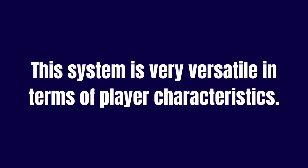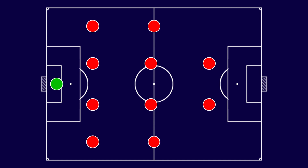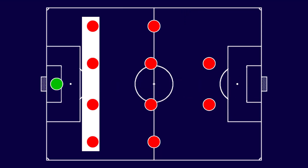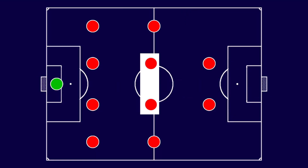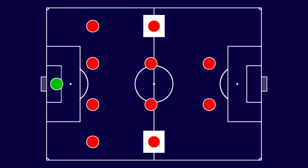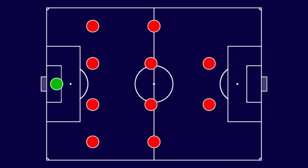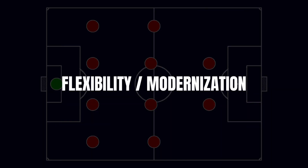This system is very versatile in terms of player characteristics. The classic flat 4-4-2, closely associated with English football, was based on physical and direct play. It had a solid defensive line, box-to-box midfielders, fast wingers who focused on beating the opposing full-backs one-on-one and getting to the byline to cross the ball, and two strikers capable of finishing crosses and competing for long balls. This model has become more flexible and modernized over time.